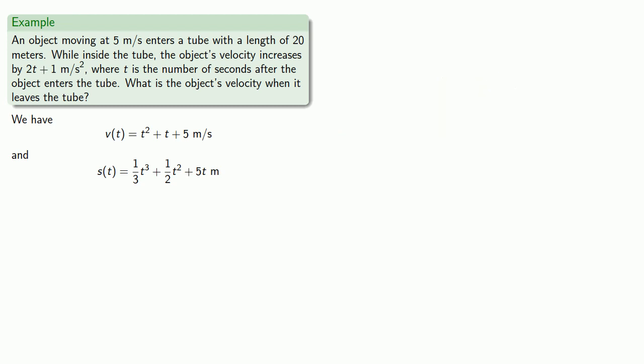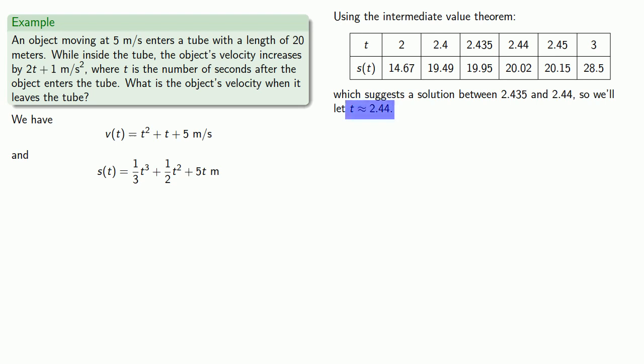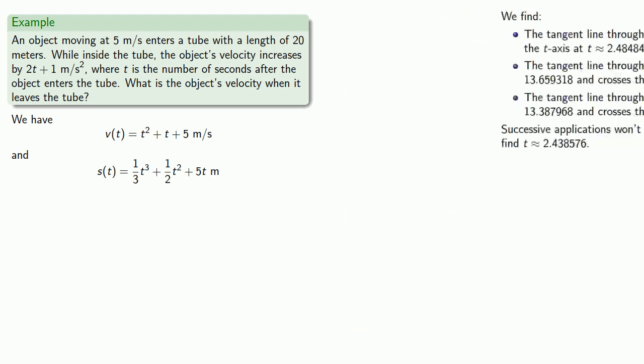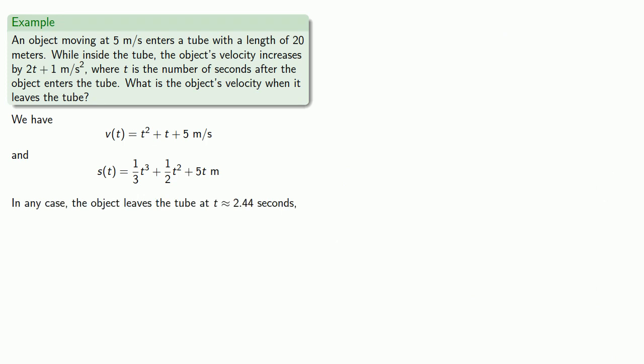So whether we use Wolfram alpha, continuity and the intermediate value theorem, or Newton's method, we find the object reaches the end of the tube after about 2.44 seconds. And since we have v of t, we'll substitute that in to find the object's velocity when it leaves the tube.